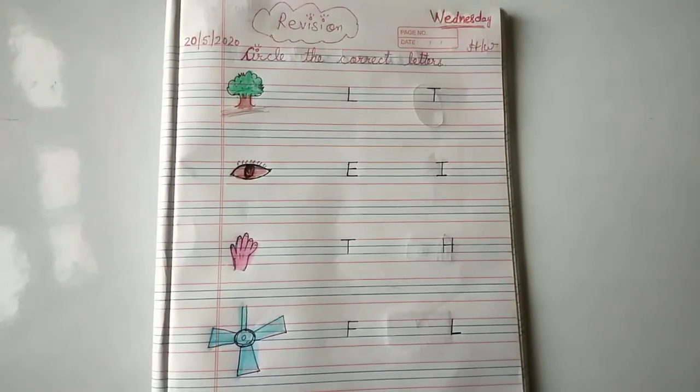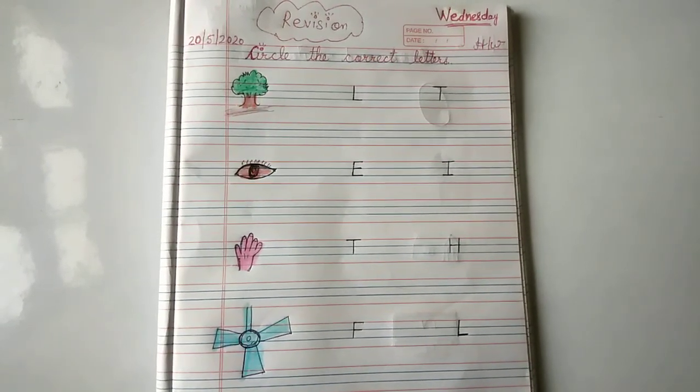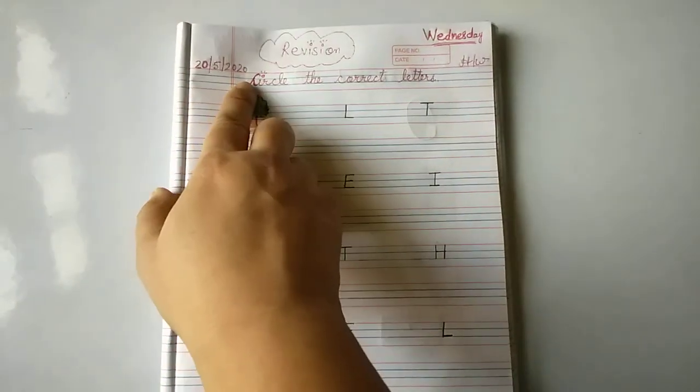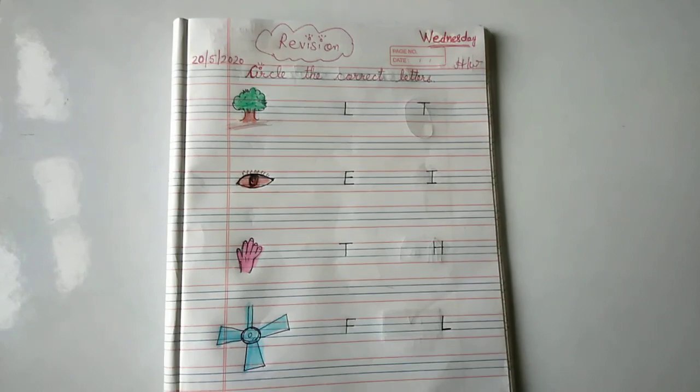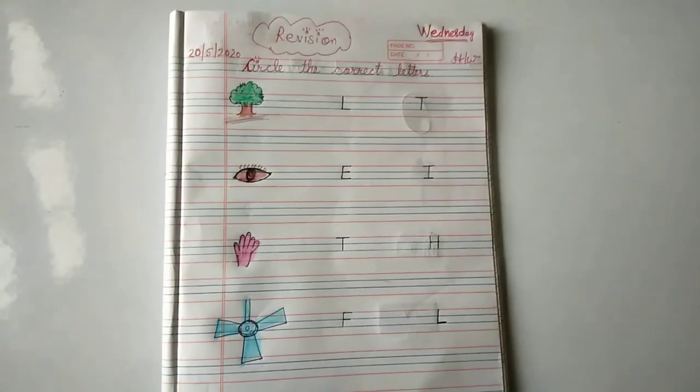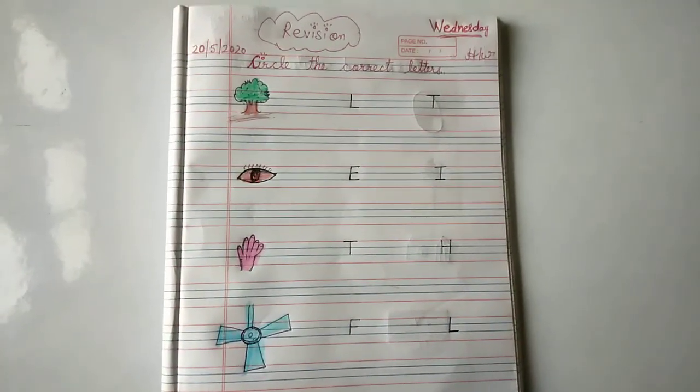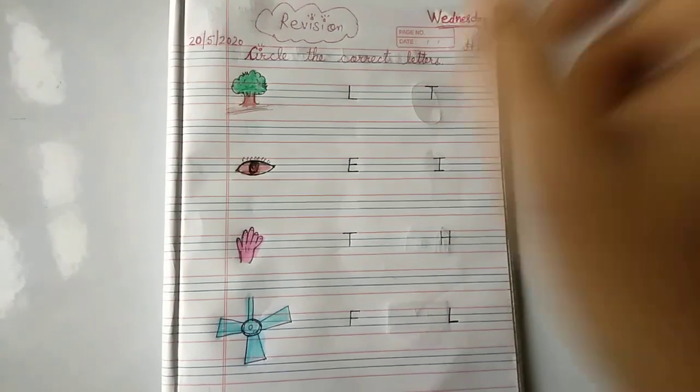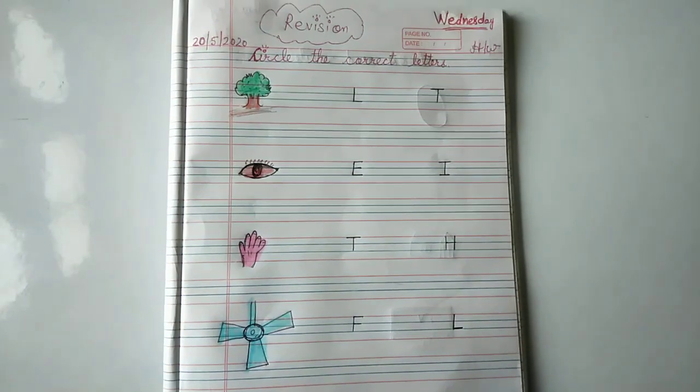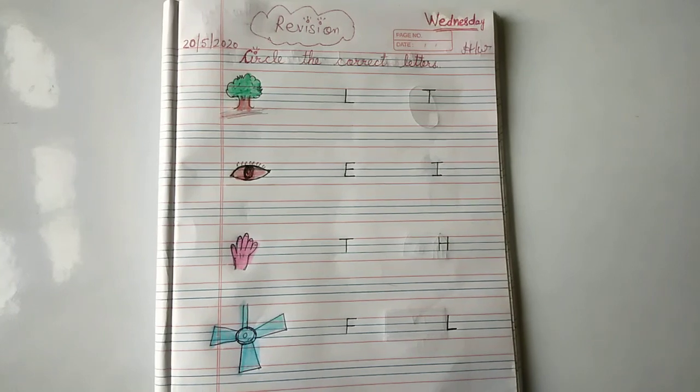So let's do today's revision. It's circle the correct letters. Okay, today is 20th of May 2020. Aaj koon si tarik hai? 20 May 2020. Malabh 20 May 2020. And today is Wednesday. So our this topic is for revision, it's circle the correct letters.